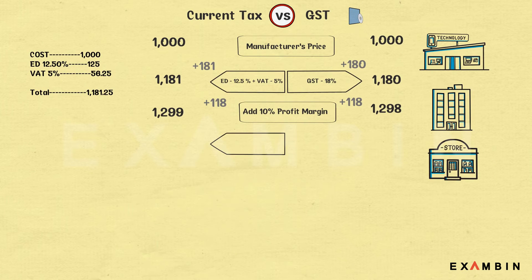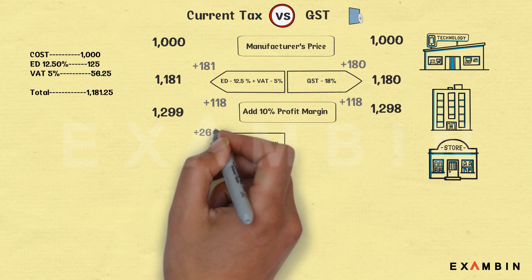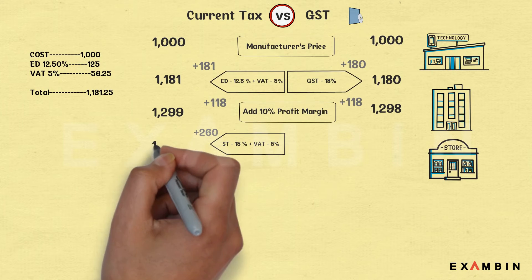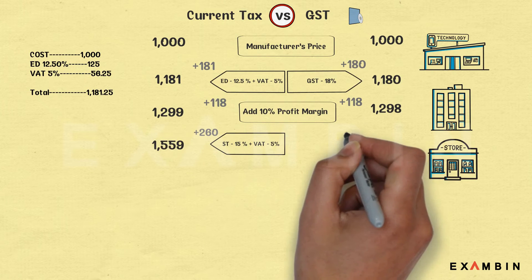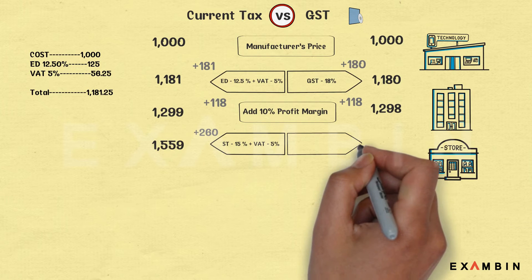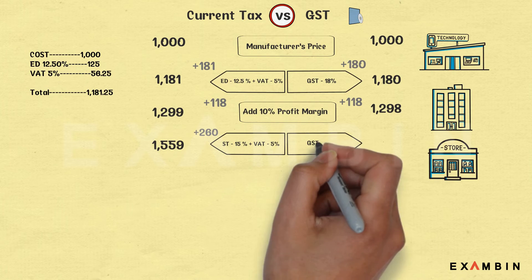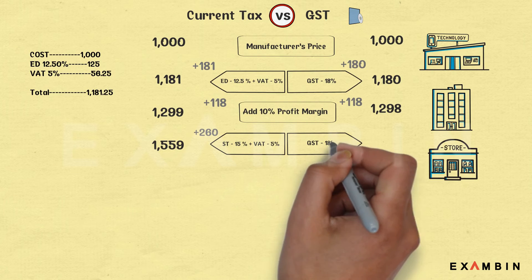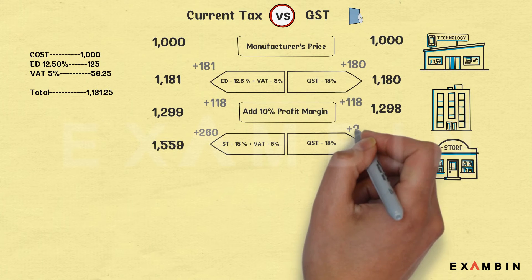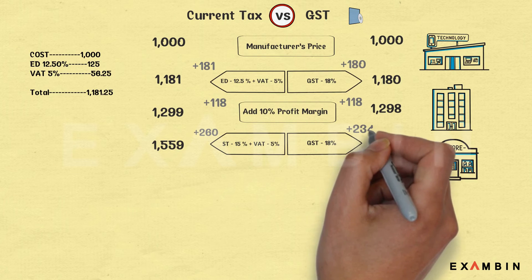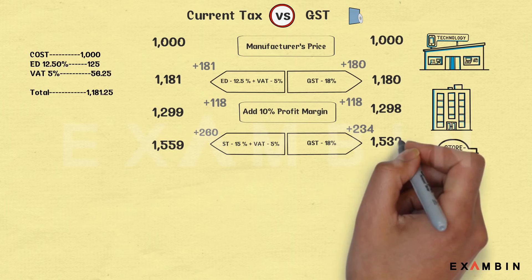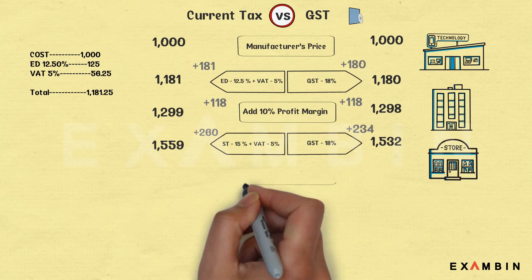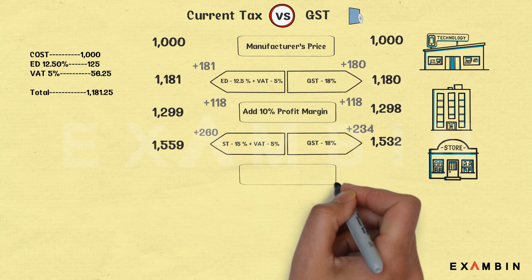When the distributor sells to retail stores, two taxes apply in the current system: service tax of 15% and VAT of 5%, together adding 260 rupees to the price, giving 1559 rupees. In the GST system, with single taxation of 18%, you save directly 2% — 234 rupees is added, making it 1532 rupees.